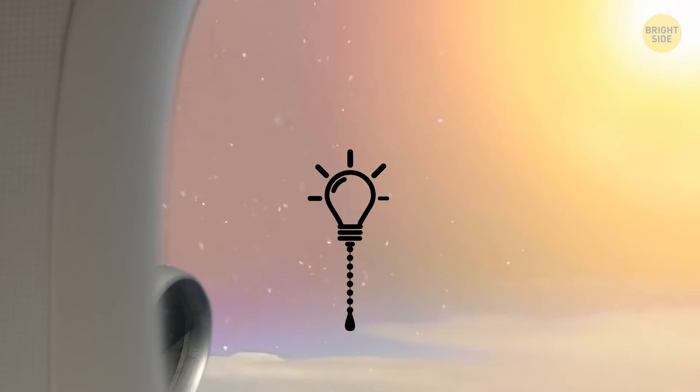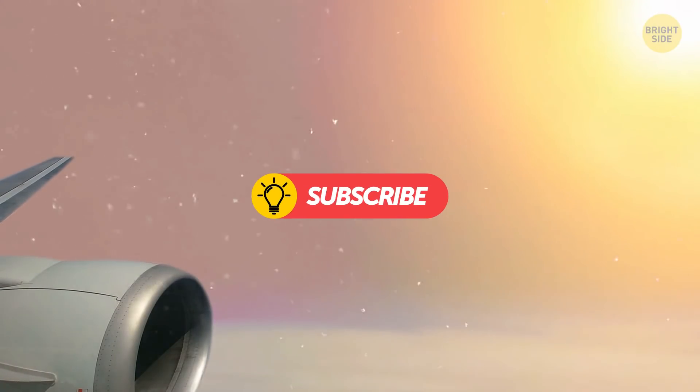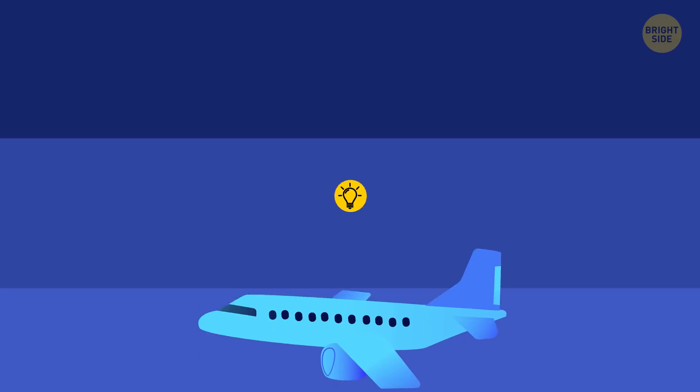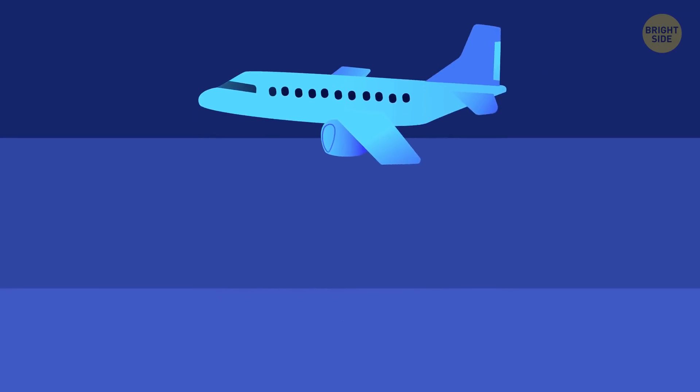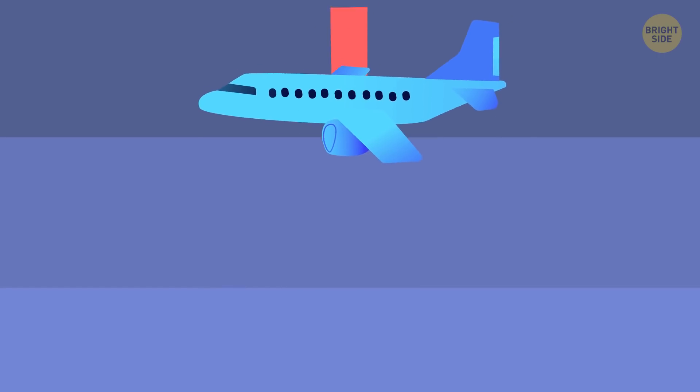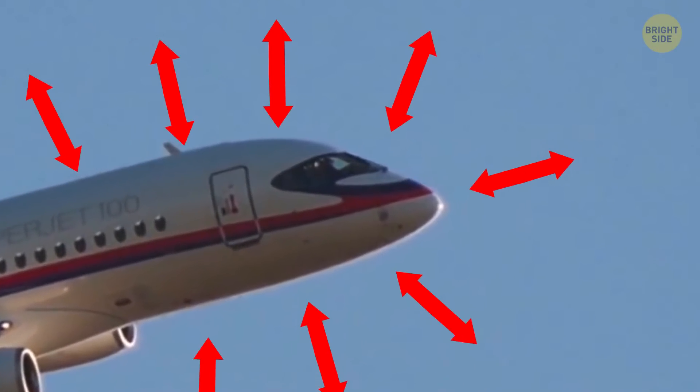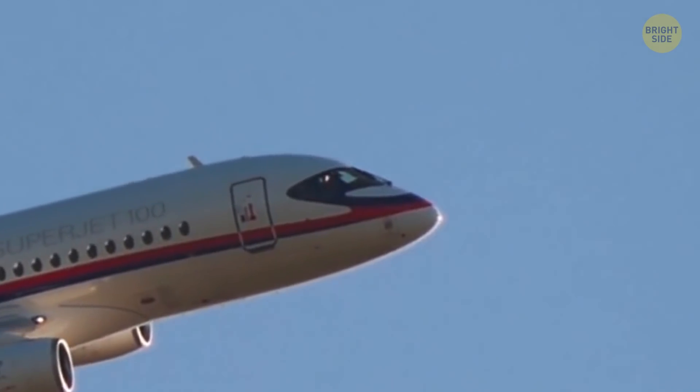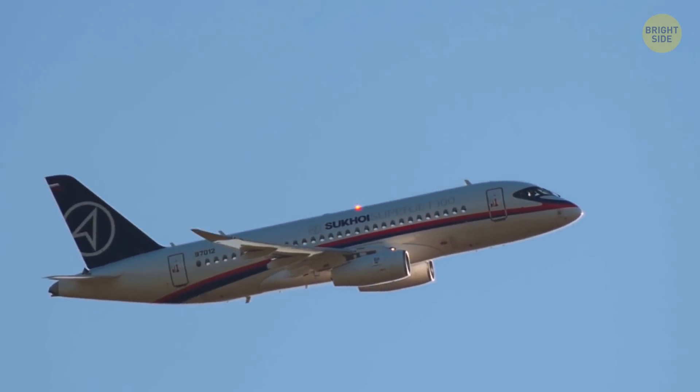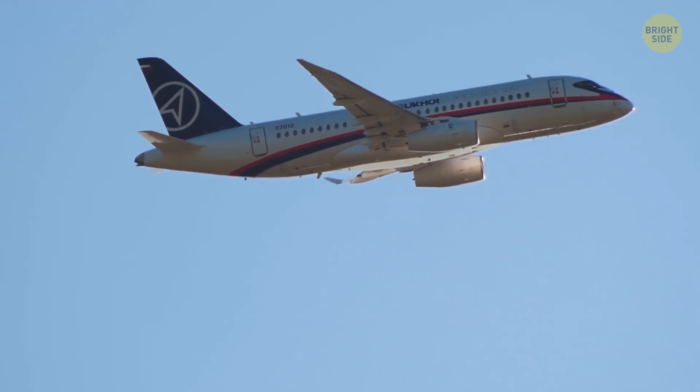Besides, the higher you get, the thinner the air becomes. Eventually, if a plane climbs too high up, the air gets too thin to provide enough lift to keep the machine up. The thing is that the difference in air pressure creates the necessary lift. And if the altitude is too high, this difference is almost non-existent.